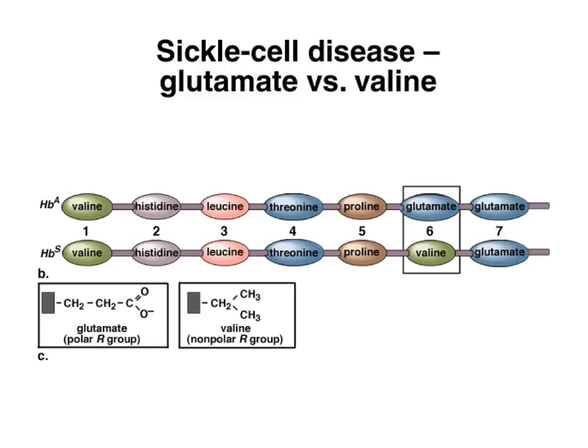The most common way proteins will misfold is if their primary structure is not correct since the beginning. So this is what happens when you have mutations, and mutations will be changes in the DNA. So a mutation is just a change in the DNA. If that change in the DNA causes a change in the amino acid coded, that could result in a change in the function of the protein.